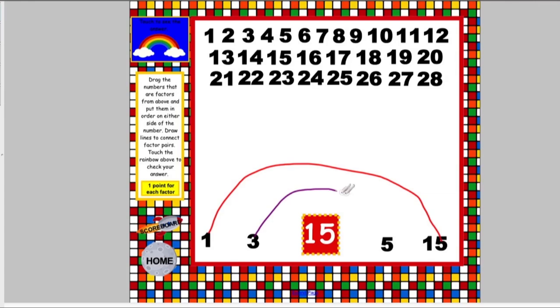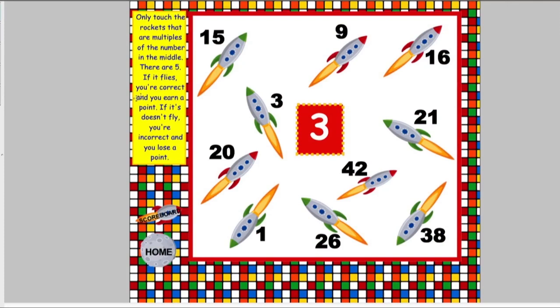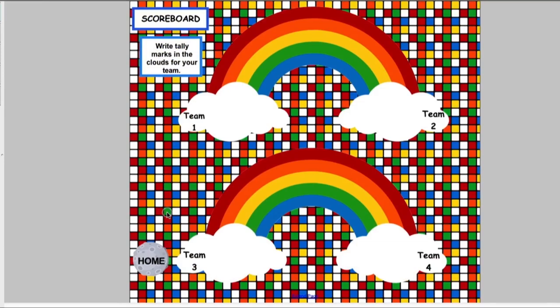To practice multiples, students touch a rocket ship. They will search for five rockets that contain multiples of the number in the center of the pane. If the number is a multiple, its rocket will fly off. If not, it will stay still. Students earn a point for each multiple rocket they find.